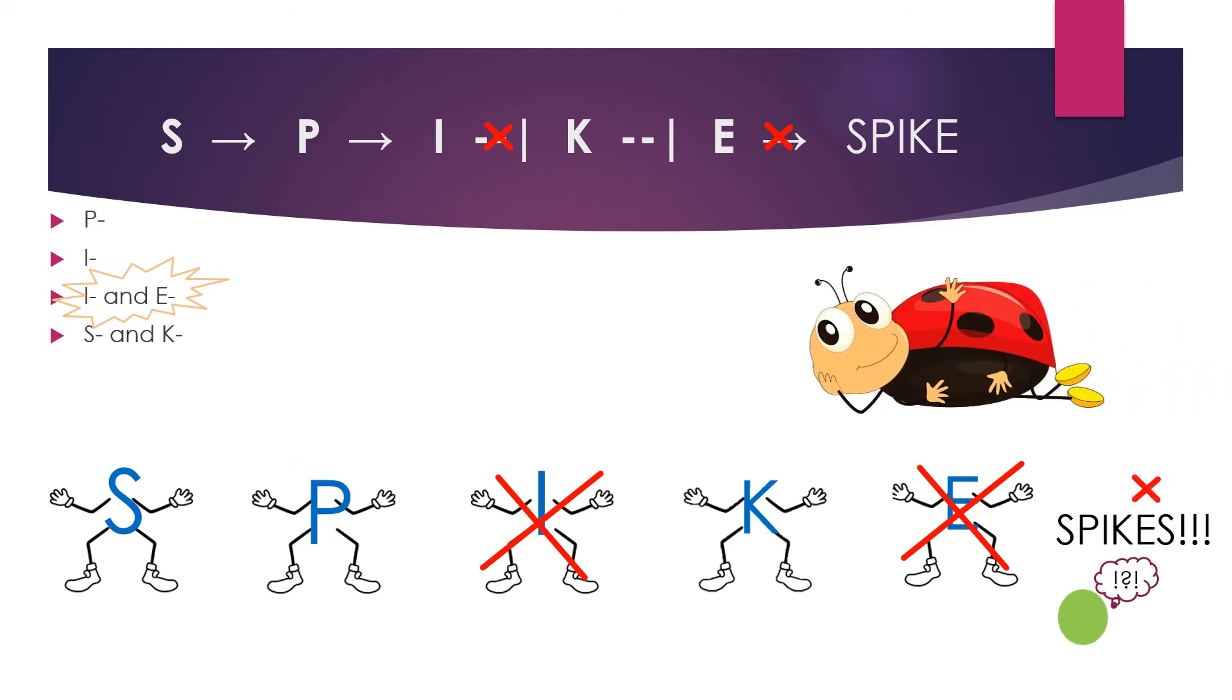If only E was mutated, this pathway would still not produce spikes. So the mutation at I doesn't matter too much.